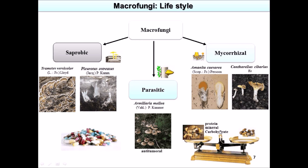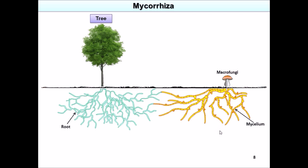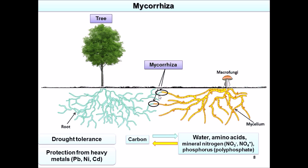My research is focused on mycorrhizal fungi. These are very important in the environment and in the forest because they create links and exchange nutrients with trees. The mycelium of mycorrhizal fungi forms an organism called mycorrhiza with the roots, which can help the tree tolerate drought and protect it from heavy metals. The fungi give water, amino acids, mineral nitrogen, and in return receive carbon from the tree.